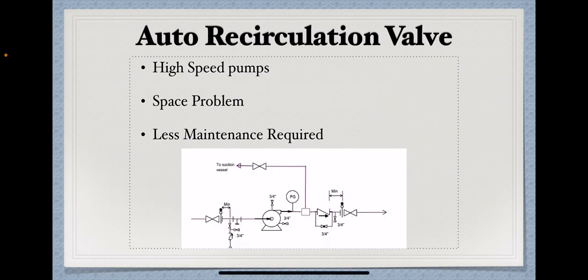The third option is the auto recirculation valve. Now, there are some situations where the minimum recirculation line with the control valve cannot be provided due to the plot plan constraints.